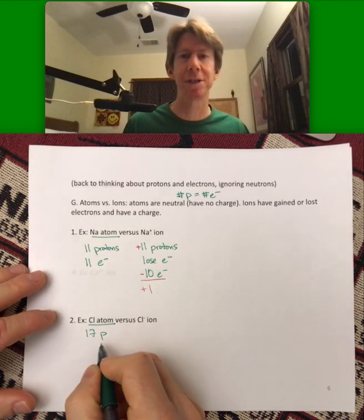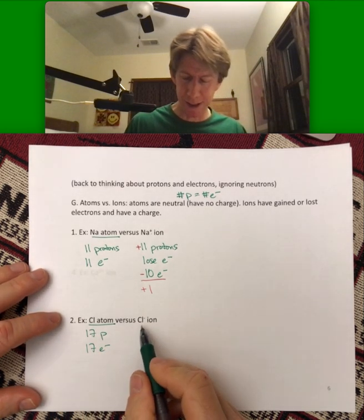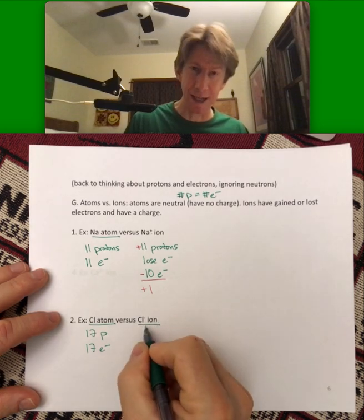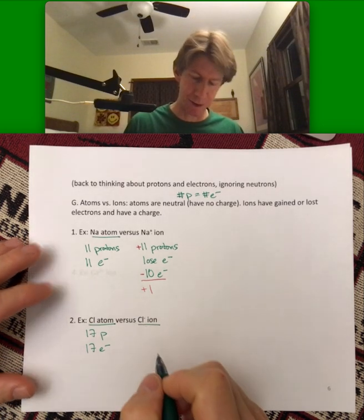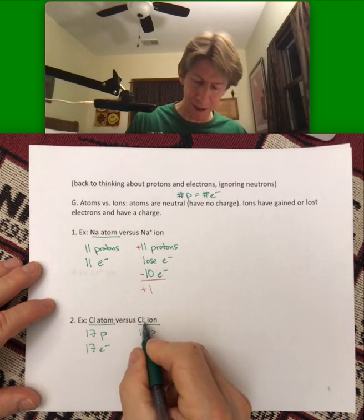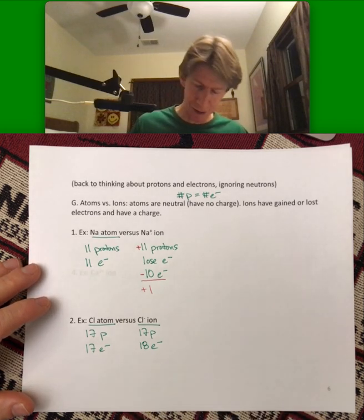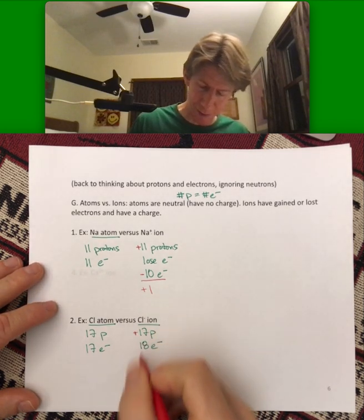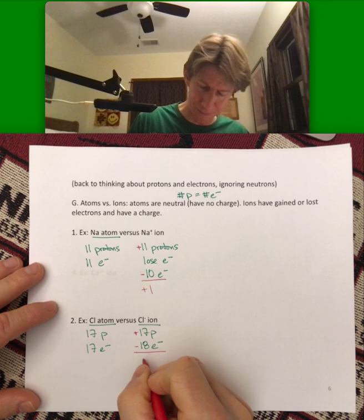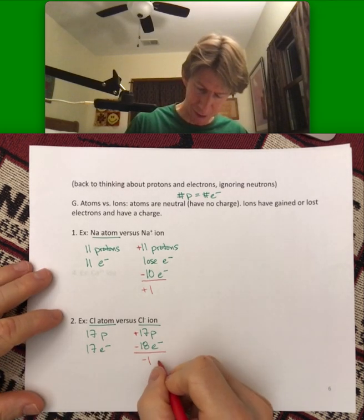And I'm just going to use P for protons there, 17 electrons. Now, this is the chloride ion. We will soon learn its name if you haven't already. Still has 17 protons. It has a minus charge that is 18 electrons. You can do it like this, plus 17 for the protons, minus 18. Yes, that does have a minus 1 charge.